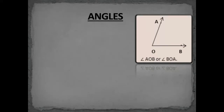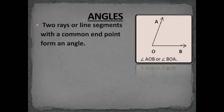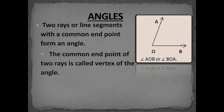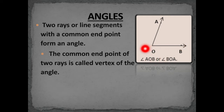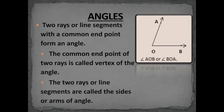Hello children! In today's video we will learn about angles and their types. First of all, let us learn what is an angle. When two rays or two line segments meet each other at a point, we get an angle. The two rays OA and OB, when they meet at O, we get angle AOB. This point O is called the vertex of the angle, and the rays OA and OB are called the sides or arms of the angle.